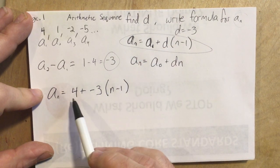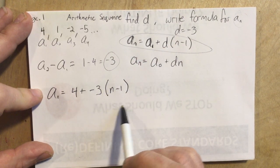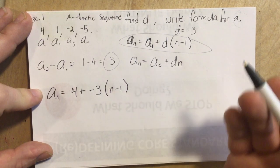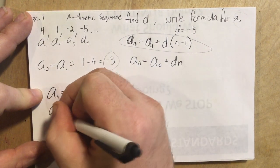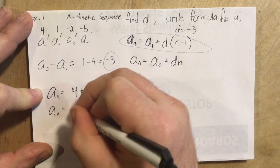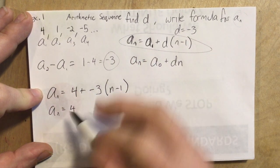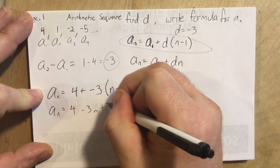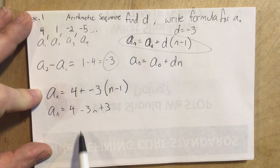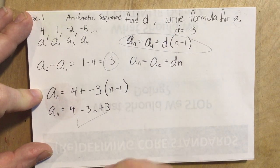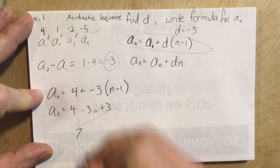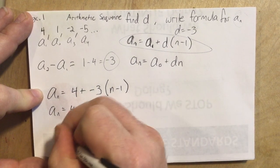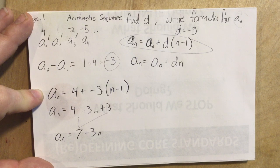Now this is just the formula for a_n. So in this case, we're not going to plug a number in for n. We want to clean it up. We will distribute the negative 3 and simplify it from there. So 4, negative 3 times n is negative 3n. Negative 3 times negative 1 is positive 3. We can add those together. We get 7 minus 3n. A_n is equal to 7 minus 3n.